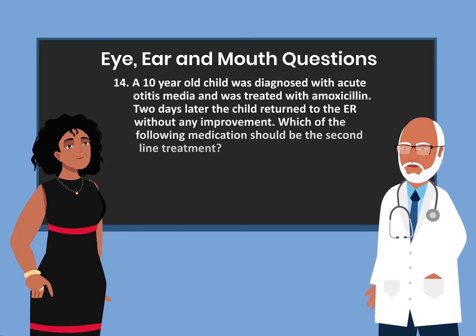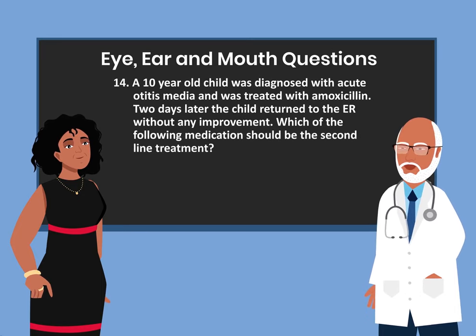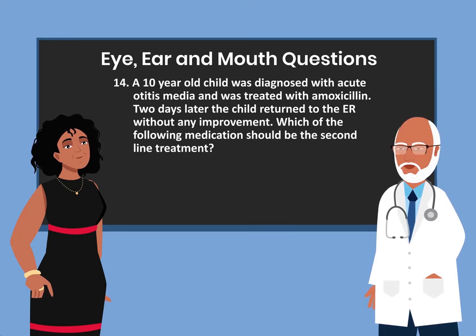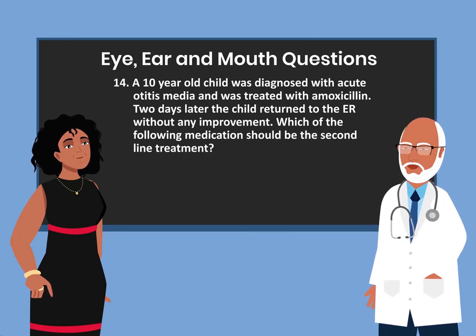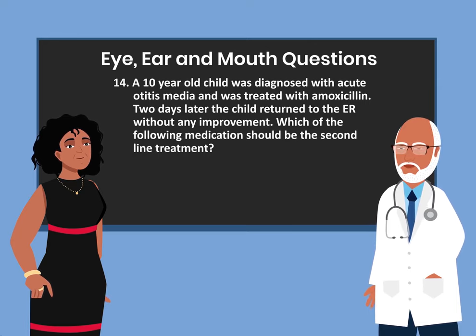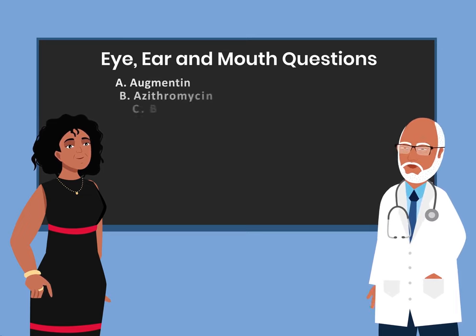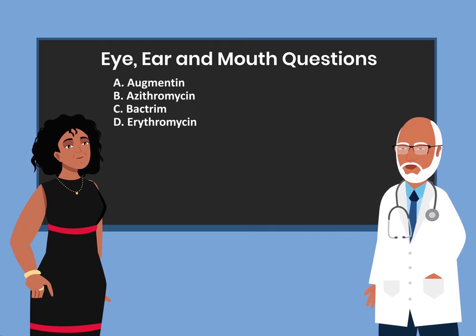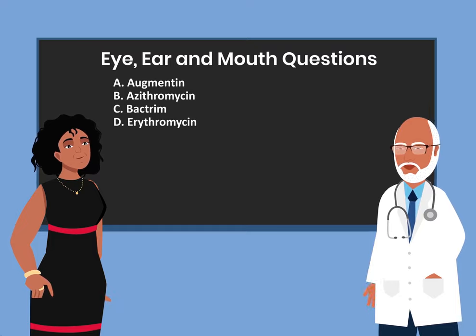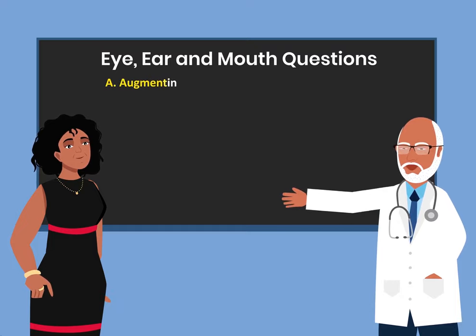Question 14. A 10-year-old child was diagnosed with acute otitis media and was treated with amoxicillin. Two days later, the child returned to the ER without any improvement. Which of the following medications should be the second-line treatment? A. Augmentin. B. Azithromycin. C. Bactrim. D. Erythromycin. The answer is A. Augmentin.